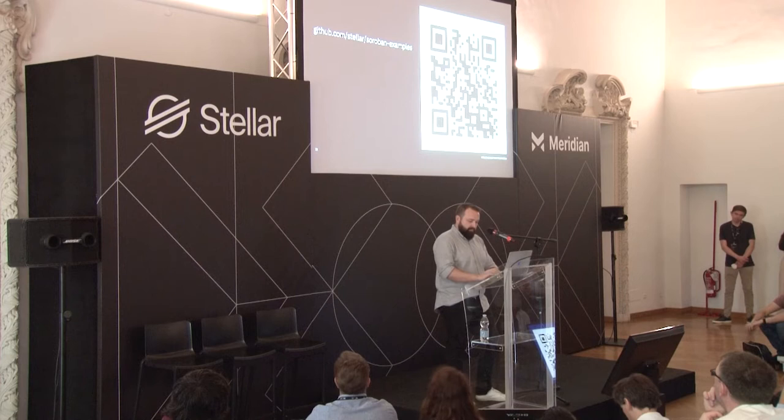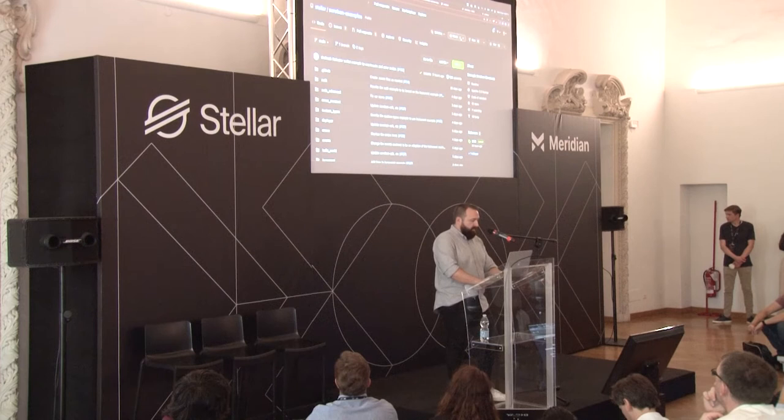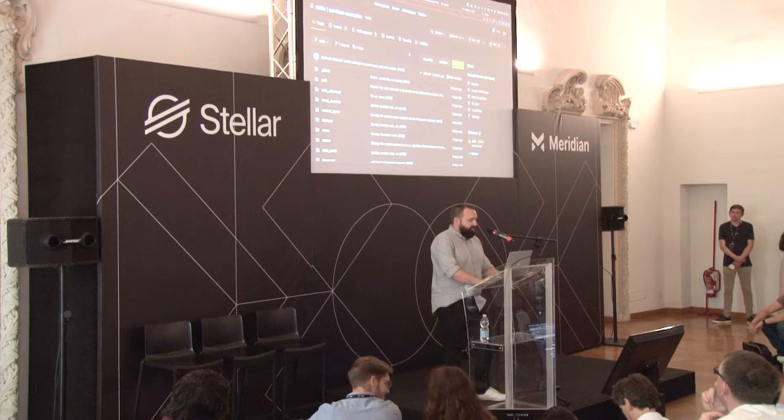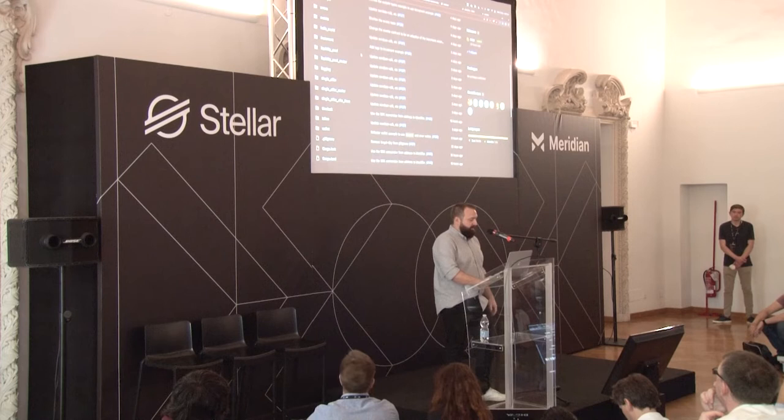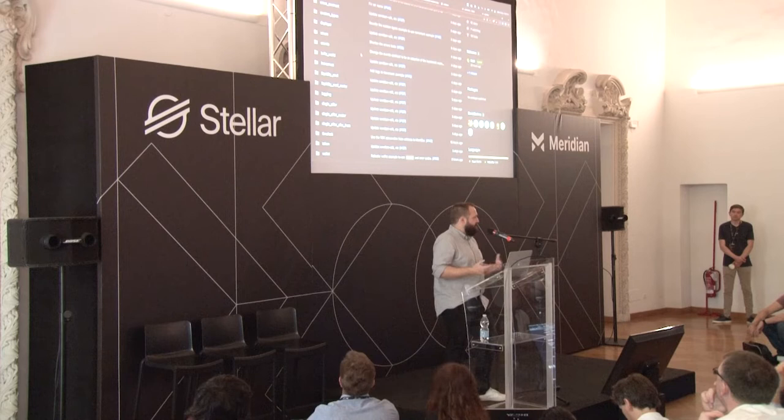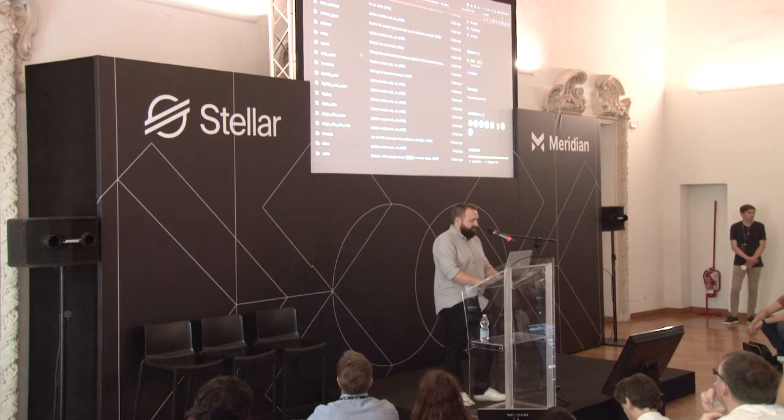Let's go through the example repo. There are all sorts of example contracts in here — authentication, advanced authentication, writing a liquidity pool, how to deal with events, single offers, time locks, everything. This is a super good cookbook. When you're first learning how to write Soroban contracts and you have a question like 'how do I do authentication?', you can go look in here and just grab it for your own contract.